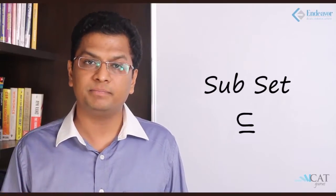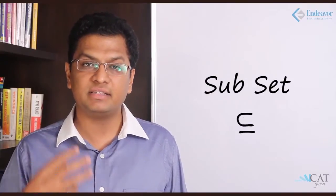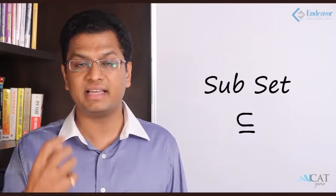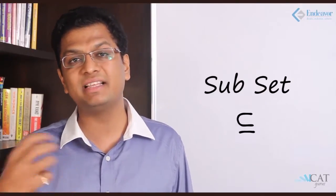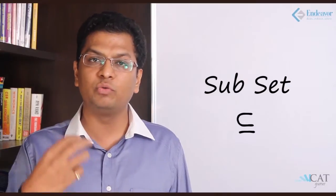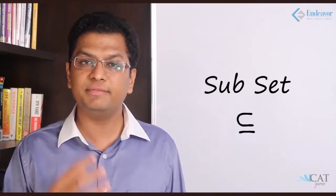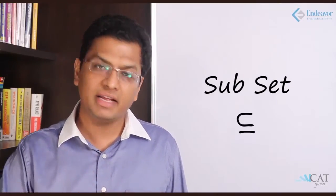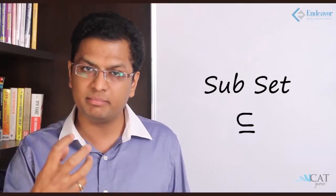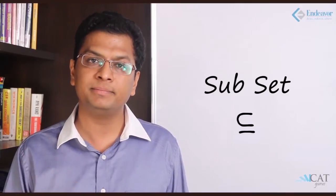What is a subset? If the first set is a set of even numbers and the second set is a set of even numbers less than 100, then the second set will have 2, 4, 6, 8 up to 98, while the first set will have infinite elements. So the second set becomes a subset of the first set.